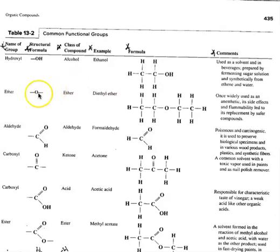The next is ether. Ether has this oxygen that's sandwiched in between two portions. This is the methyl group, this is the ethyl group here. And this oxygen is sandwiched in between, and then this becomes diethyl ether.